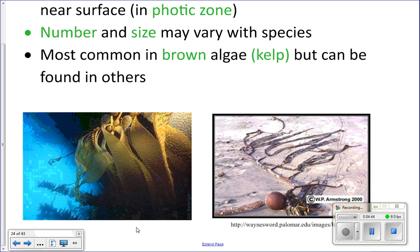For example, in macrocystis (giant kelp), each blade has its own individual air bladder attached to it, whereas in Elkhorn kelp there is one big air bladder that keeps all of the blades up at the top.